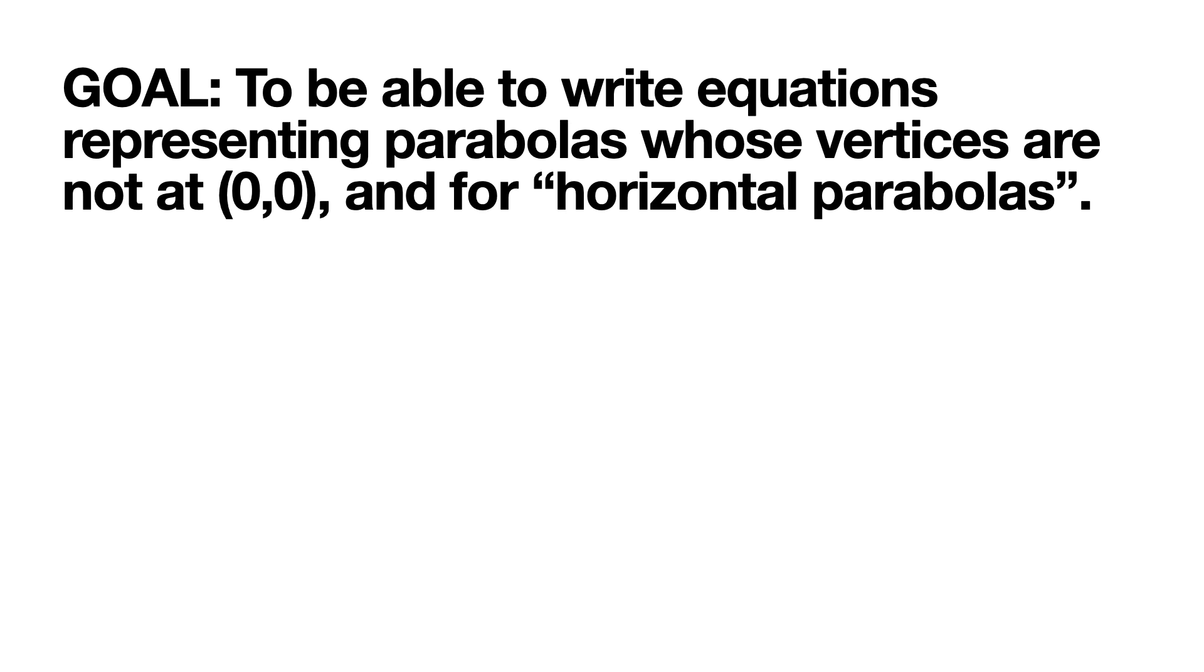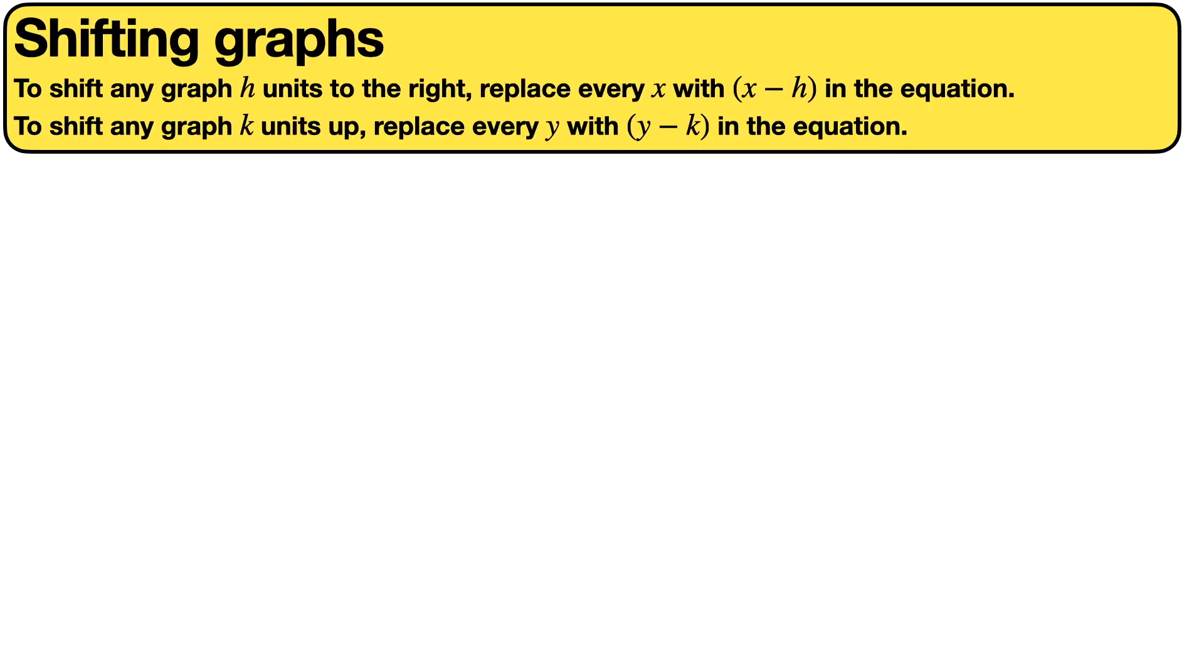The goal of today's lesson is to be able to write equations representing parabolas whose vertices are not at (0,0) and for horizontal parabolas. First we will discuss shifting, or translating, graphs in general. To shift any graph h units to the right, replace every x with (x-h) in the equation, and to shift any graph k units up, replace every y with (y-k) in the equation.